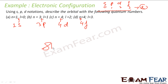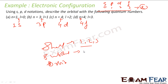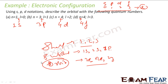Just understand: you have shells numbered 1, 2, 3 and so on; sub-shells such as 1S, 2S, 2P; and then orbitals like 2Px, 2Py, 2Pz. Each orbital holds 2 electrons, each sub-shell holds 2L+1 orbitals, and each shell has 2n² electrons.